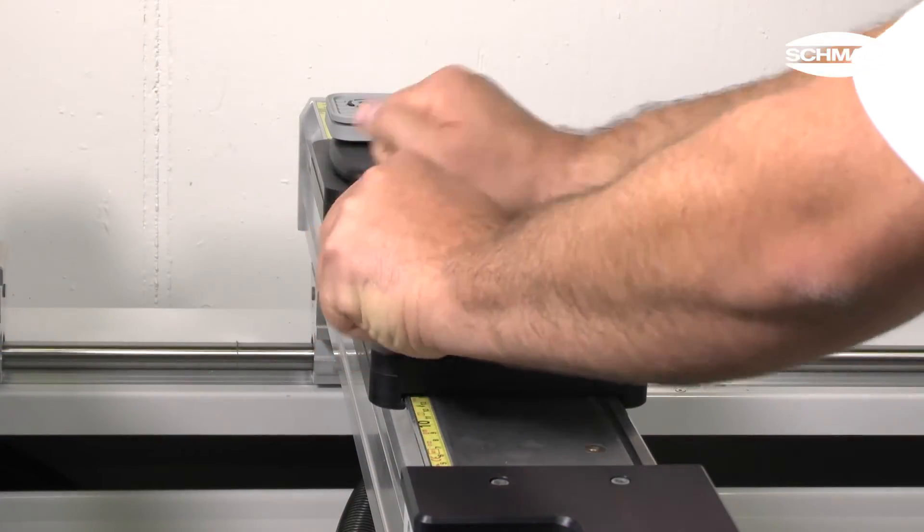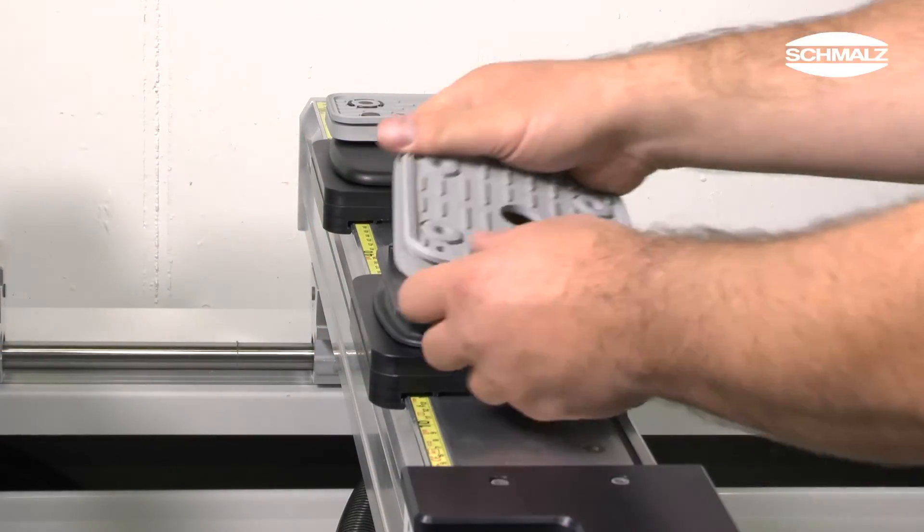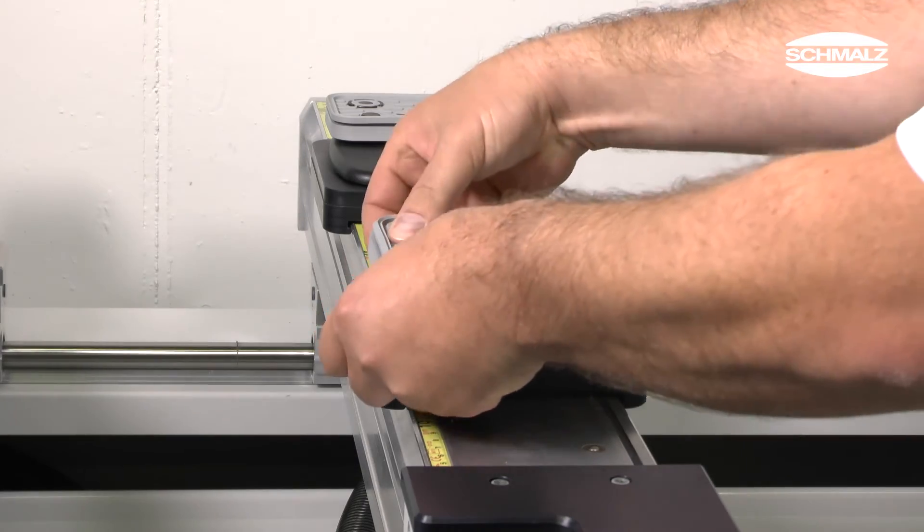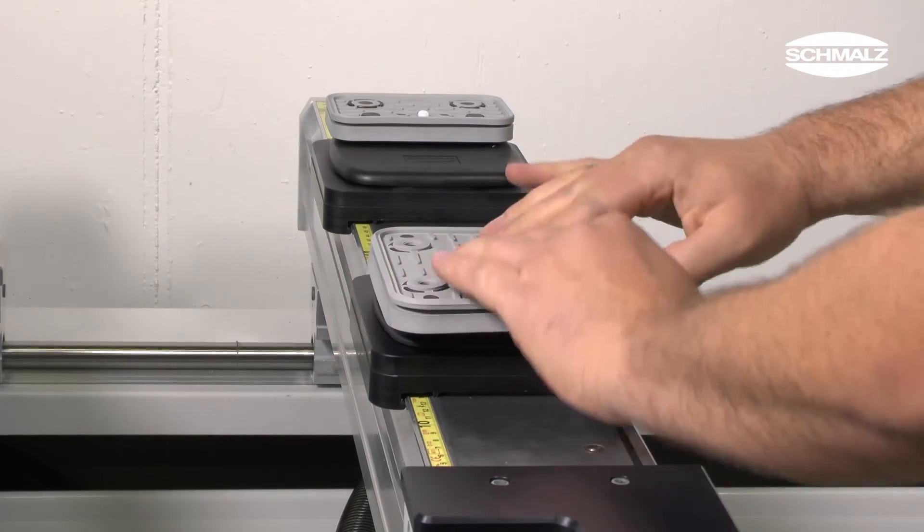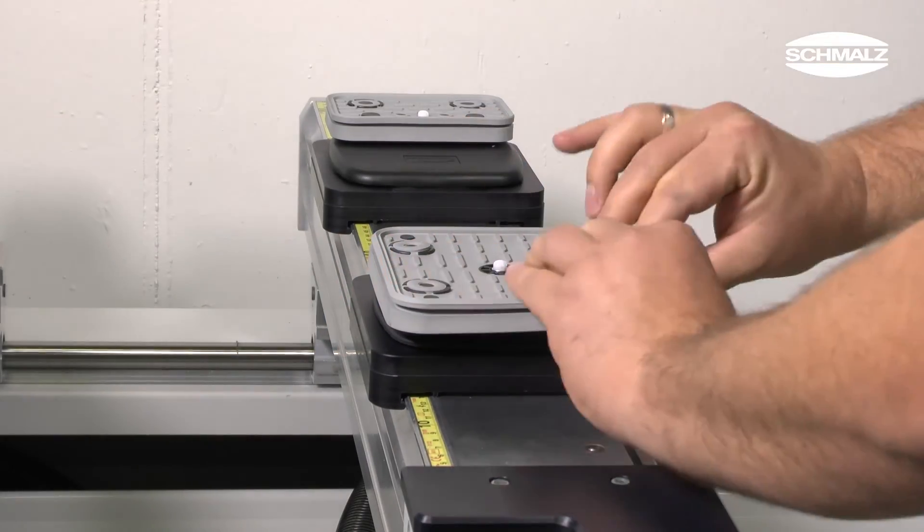The suction area of each Schmalz vacuum block is made up by a grey suction plate. After a collision, the suction plate can simply be replaced, so you don't have to invest in a whole new vacuum block.